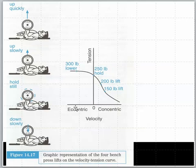Assume that 300 pounds eccentrically and 150 pounds concentrically are at the same velocity. You're able to lower a higher weight than you can lift.